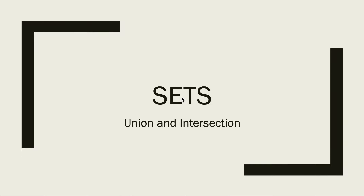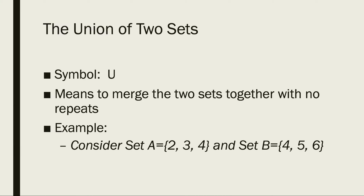In this section we're going to look at some basic operations on sets — specifically the union of two sets and the intersection of two sets. The union of two sets is denoted with the symbol U. So if our sets are A and B, you would write A union B. This means to merge the two sets together, keeping in mind that you don't want any repeats in your union set.